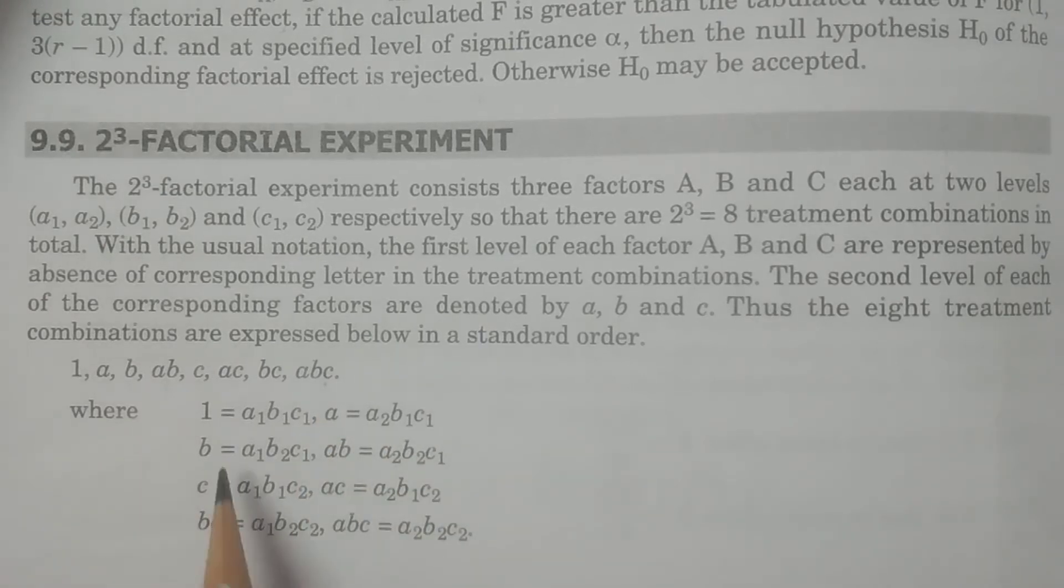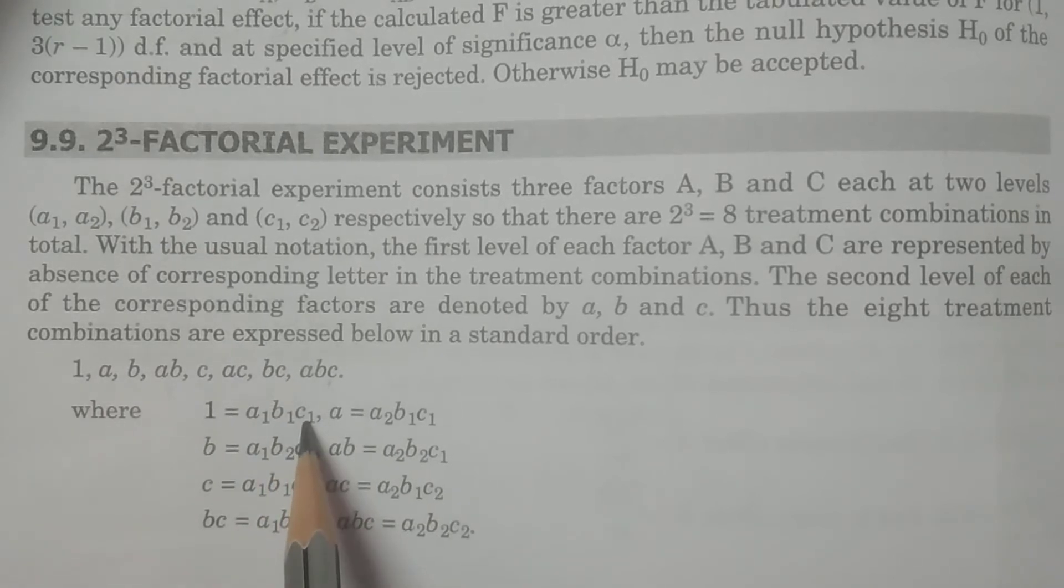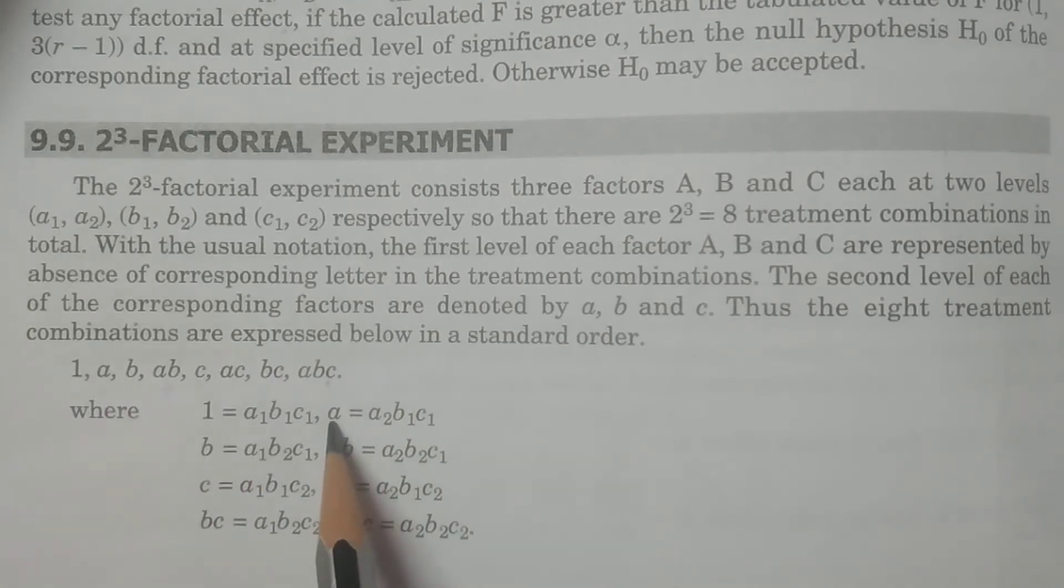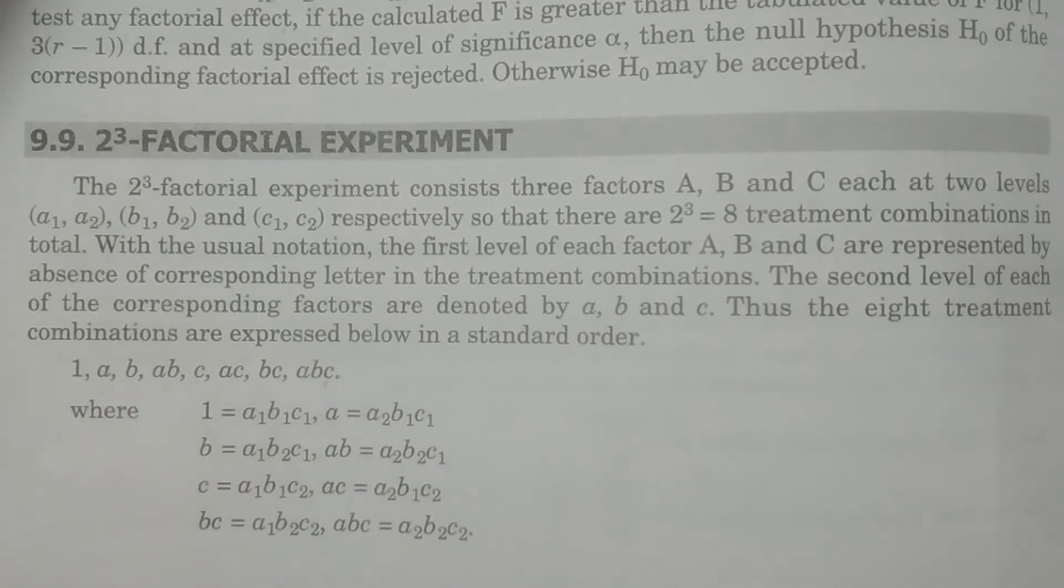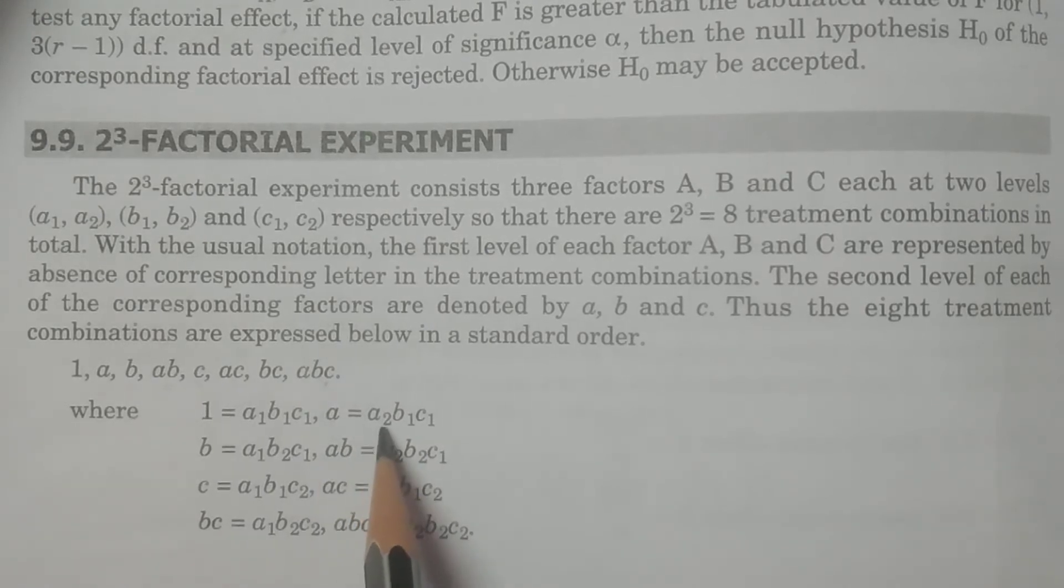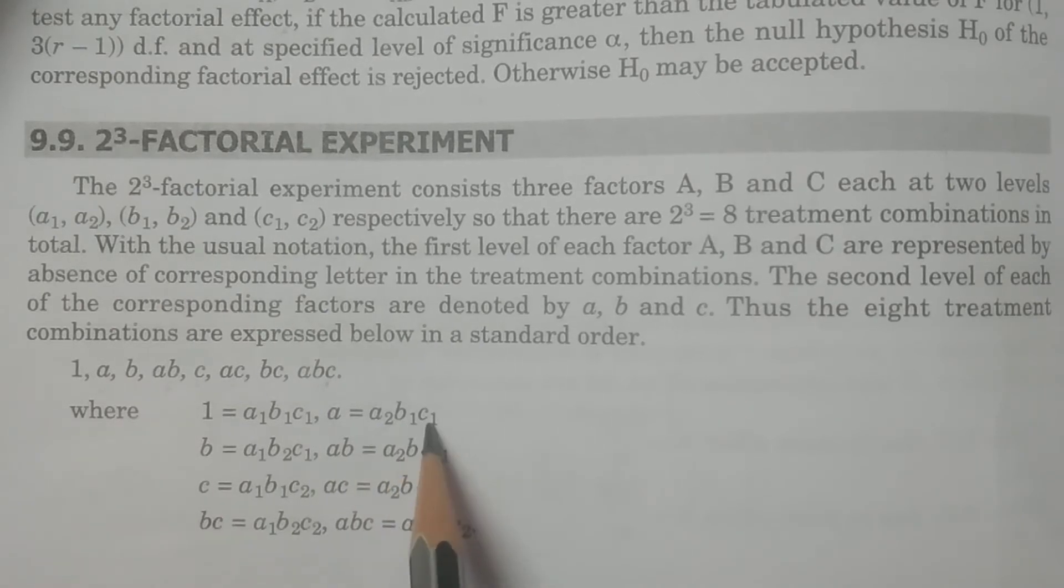So therefore, what is one? All at first level. That is A1, B1, C1. A is at first level, B is also first level, C is also at first level. A equals second one. A is at second level, which is present, which means at second level. A is second level A2. And B, C first level B1, C1.